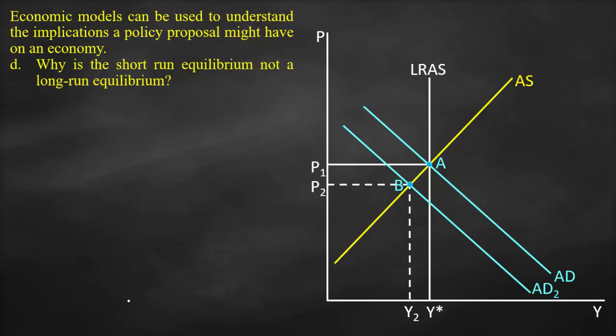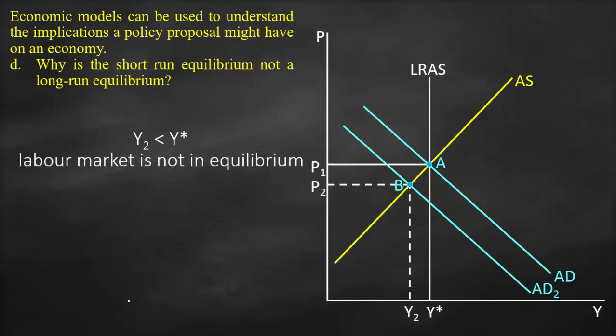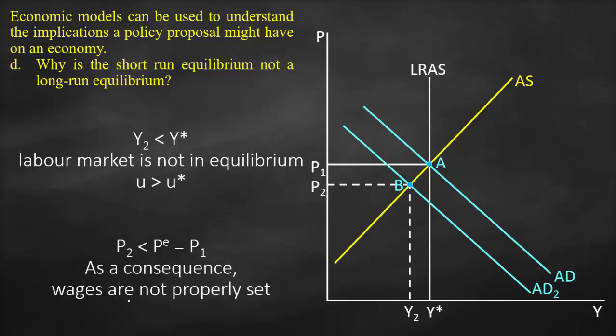The next part: why is the short-run equilibrium not a long-run equilibrium? Because Y2 is lower than full employment output Y-star, the labor market is not in equilibrium — the unemployment rate is higher than the natural rate. The price level is below P1, our original equilibrium price. As a consequence, wages are not properly set; they are not at equilibrium.